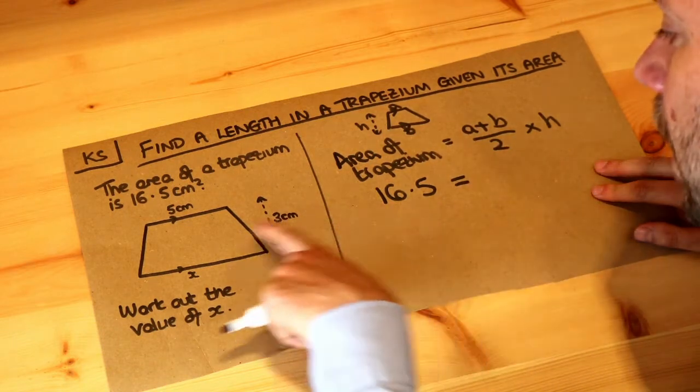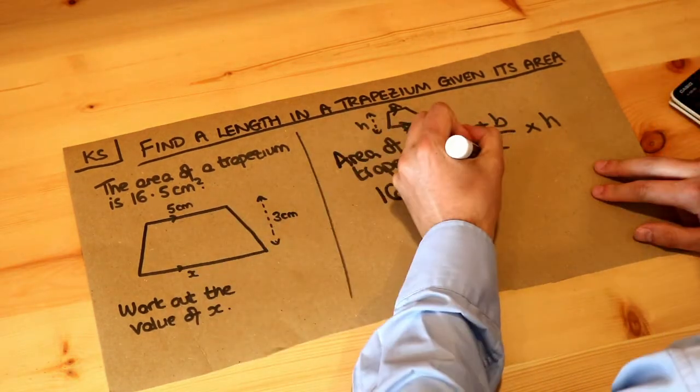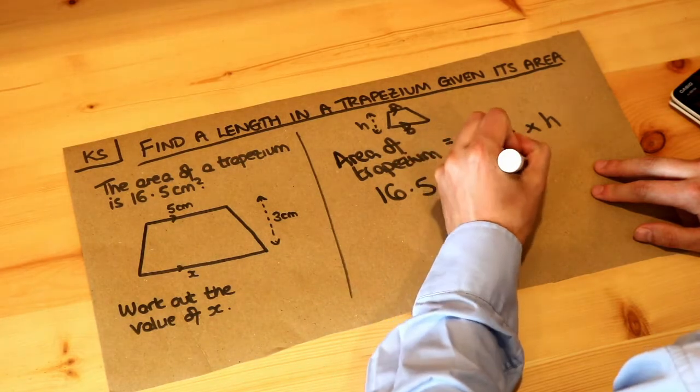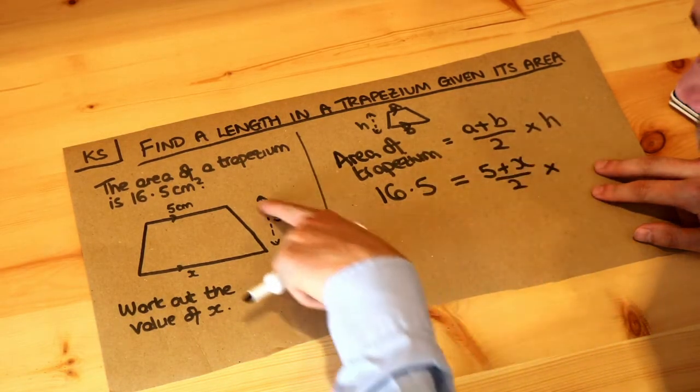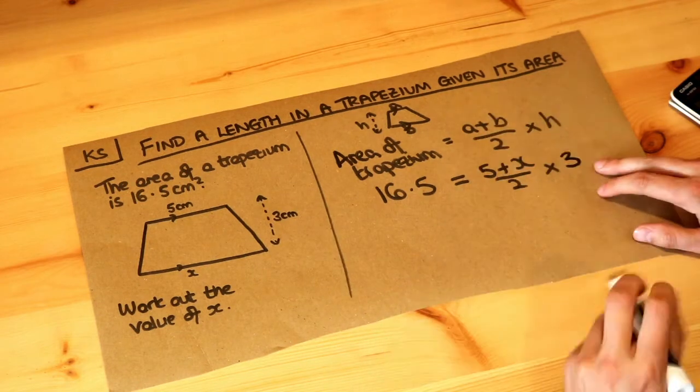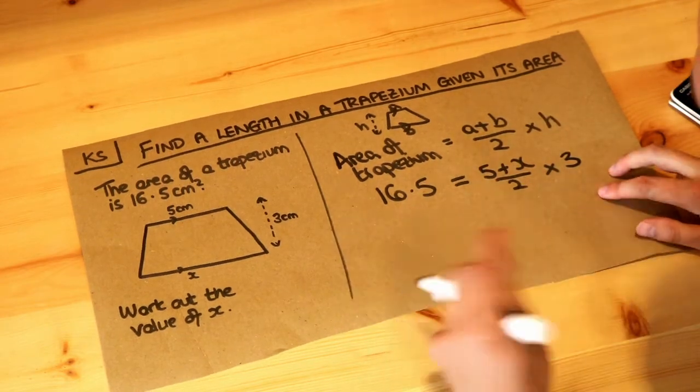Our two parallel sides are a and b. So we've got 5 and x. So 5 plus x over 2. And then we're multiplying it by the height which is 3. So we've substituted all our known values into the formula.